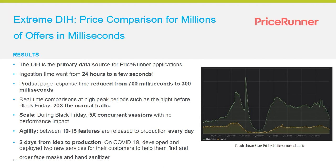The third benefit is agility — PriceRunner releases 10 to 15 features every day. Once you write Java code with everything managed, you just deploy it and it knows how to work with the data locally and optimize local versus remote data access. When COVID first started, it took them two days from idea to production — they added a module to help customers find face masks and hand sanitizers.